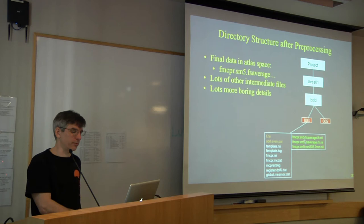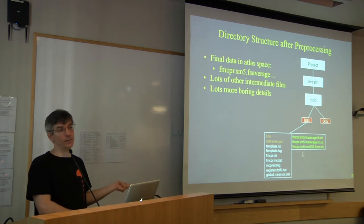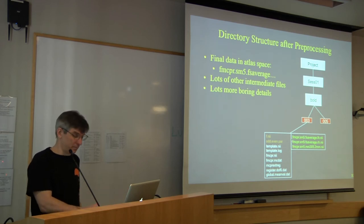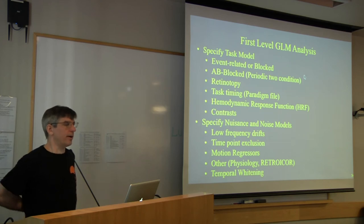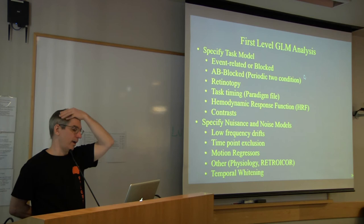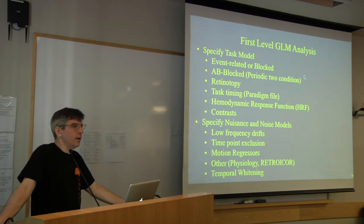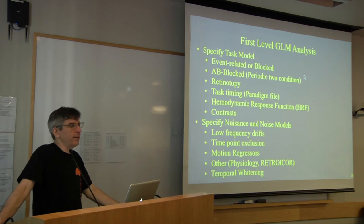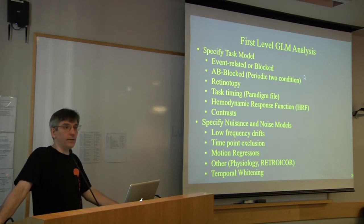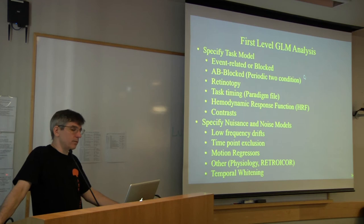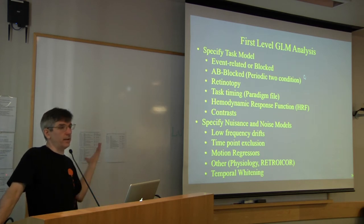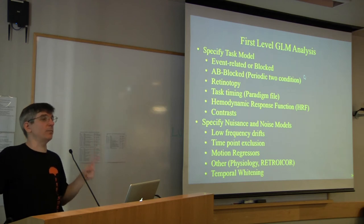After preprocessing, the directory is populated with many new files. The most important are three files (shown in green): left hemisphere, right hemisphere, and volume-based. You now have your data preprocessed and ready to start the first-level general linear model.